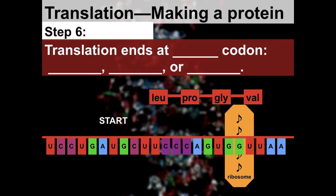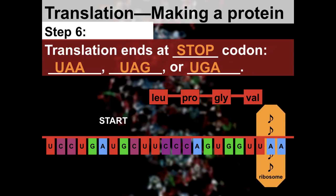The ribosome keeps going, adding amino acids like valine. Step six: translation ends at a stop codon — there are three different stop codons: UAA, UAG, or UGA. If the ribosome hits any of those three, the codon tells the ribosome to stop creating the protein and stop adding amino acids. Here we hit UAA and the ribosome stops.